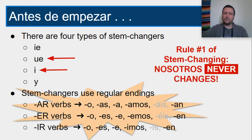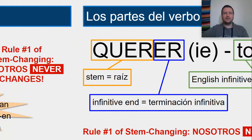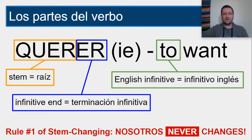And remember my number one rule: NOSOTROS never changes. I also want you to remember the parts of the verb. The AR, ER, and IR are called the infinitive ending, and everything that's left over is called the stem. Spanish uses the word raíz, which means the root.